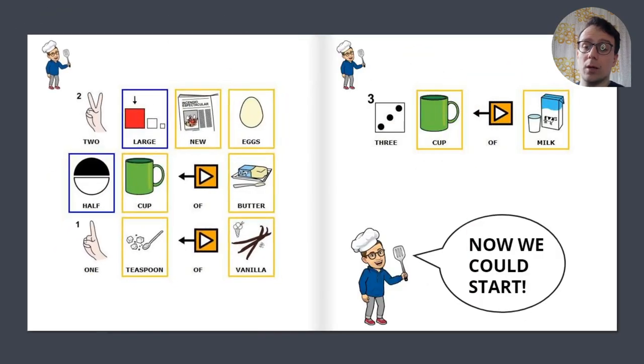Two large new eggs, half cup of butter, one teaspoon of vanilla, three cup of milk. Now we could start.